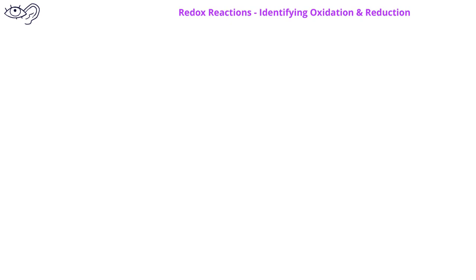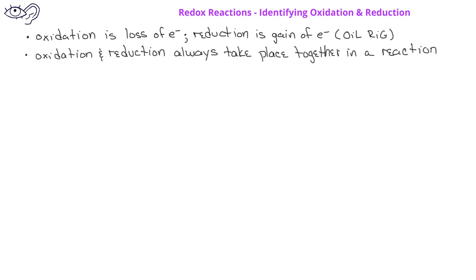In previous lessons, we learned that oxidation is the loss of electrons, while reduction is the gain of electrons. Oxidation and reduction always take place together in redox reactions.